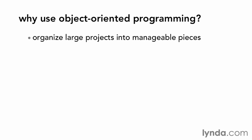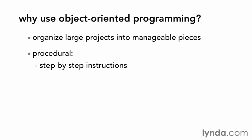Object-oriented programming allows you to organize a large project into manageable pieces. In comparison, procedural programming is a set of instructions, step by step, that the computer must follow. A procedural program can consist of a series of conditions and function calls for logic, but the end result is very linear.